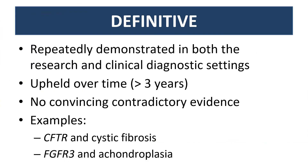For a gene disease association to be considered definitive, the role of the gene in this particular disease must have been repeatedly demonstrated in both the research and clinical diagnostic settings. This association must also be upheld over time, in general at least three years. Examples include CFTR and cystic fibrosis, FGFR3 and achondroplasia, etc.